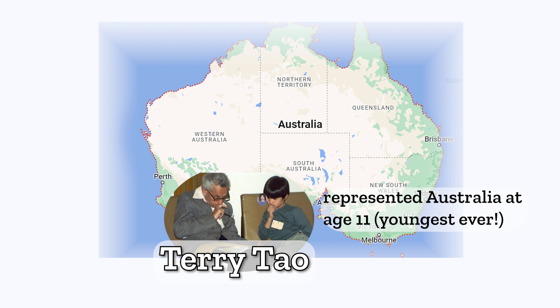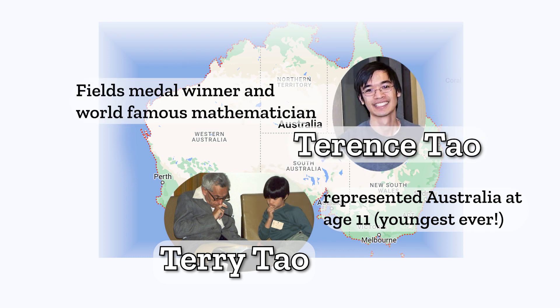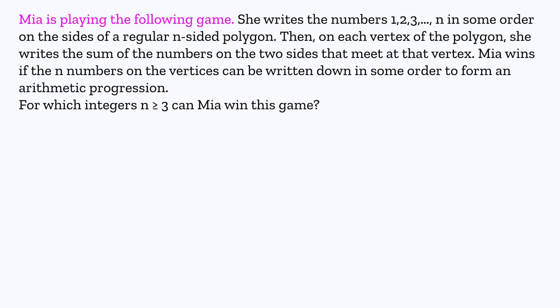Speaking of top Australian students, Terry Tao made our National Olympiad team at age 11 and now is one of the most influential and well-known mathematicians alive. But back to the problem.